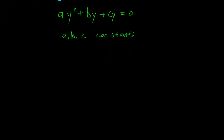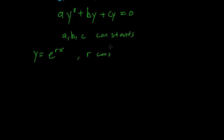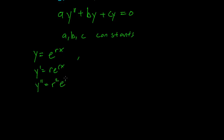There's a little trick involved here, and the trick is to express y in terms of an exponential. So we take y equals e raised to the rx for some r, and see what happens. We plug that in, and we recall that y prime is going to be r e to the rx, and y double prime is going to be r squared e to the rx.